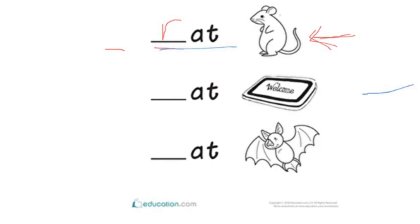Okay, look at the second picture. Do you know what this is? Mat. So what sound do you hear at the beginning of mat? M, at, mat. Can you write M on the line? The last picture is a bat. So what sound do you hear at the beginning of bat? B, at, bat. Write it here on the line.